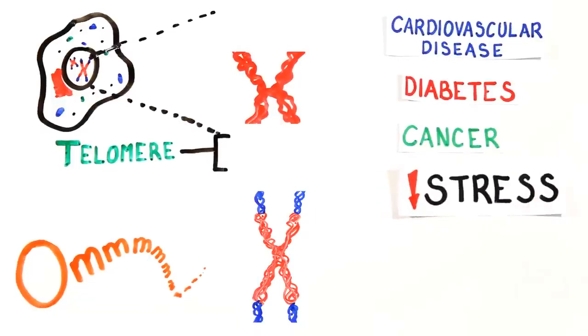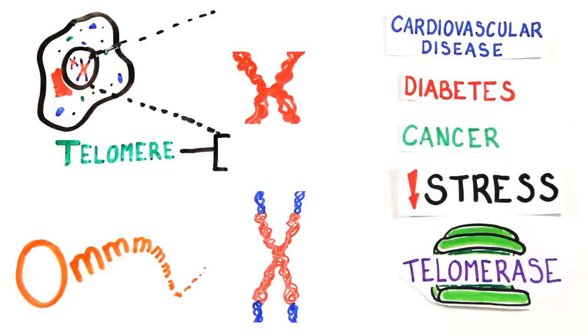It's believed that psychological intervention, particularly decreasing stress, has a direct effect on the enzyme telomerase, which has been shown to counteract shortening by adding DNA to the shrinking telomeres.